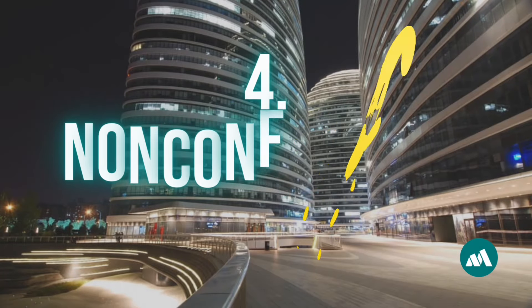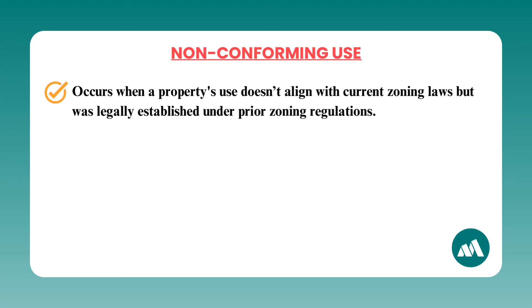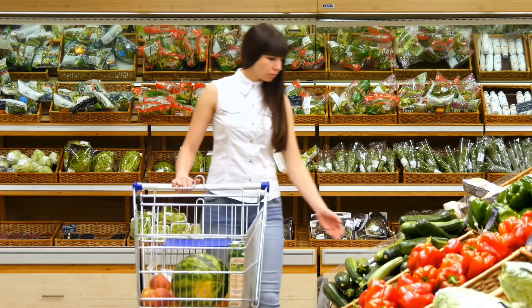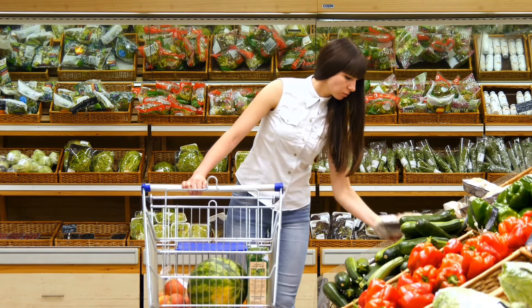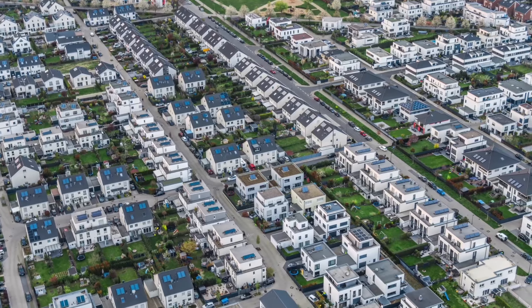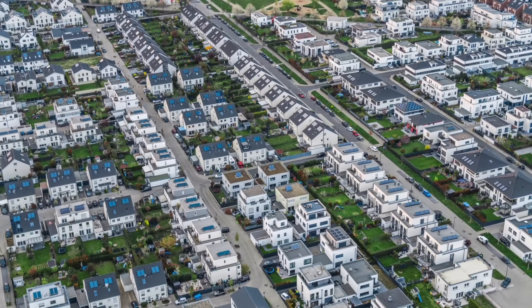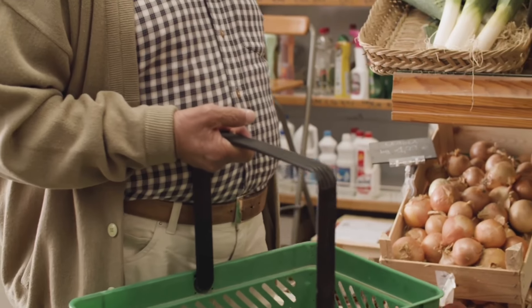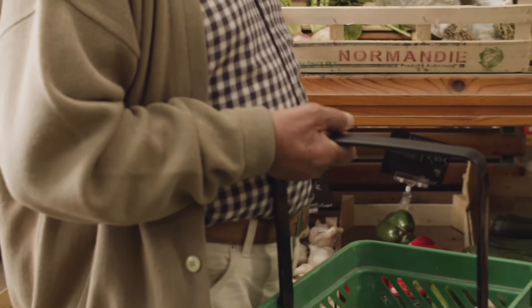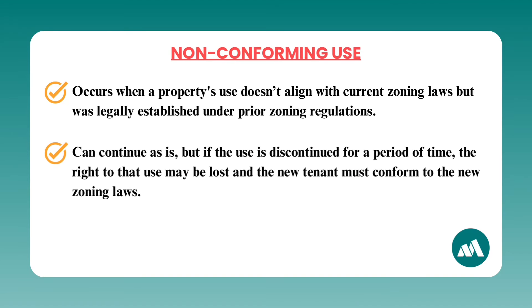Number four: non-conforming use. A non-conforming use situation occurs when a property's use doesn't align with current zoning laws but was legally established under prior zoning regulations. For example, a small grocery store operating in a residential zone because it was established before that zone was enacted. Non-conforming uses are typically grandfathered in, meaning they can continue as-is, but if the use is discontinued for a period of time the right to that use may be lost and the new tenant must conform to the new zoning laws.